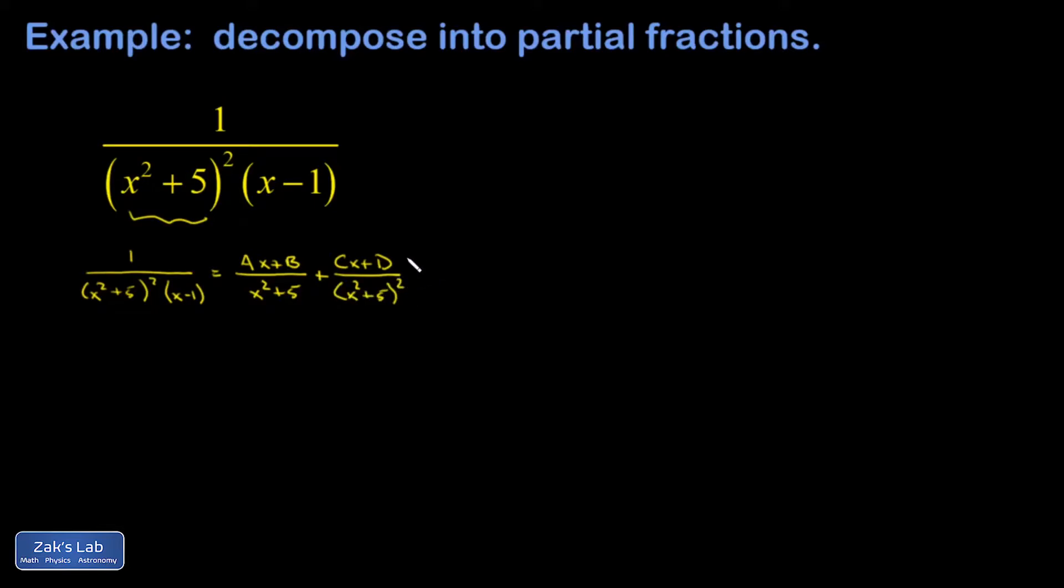All right, so the pattern is: if I had this irreducible quadratic cubed in my original function, I would have to then add another one with a linear term over that factor cubed. So you just go all the way from one copy of the factor all the way up to the maximum number, and then my linear factor constant over that linear factor.